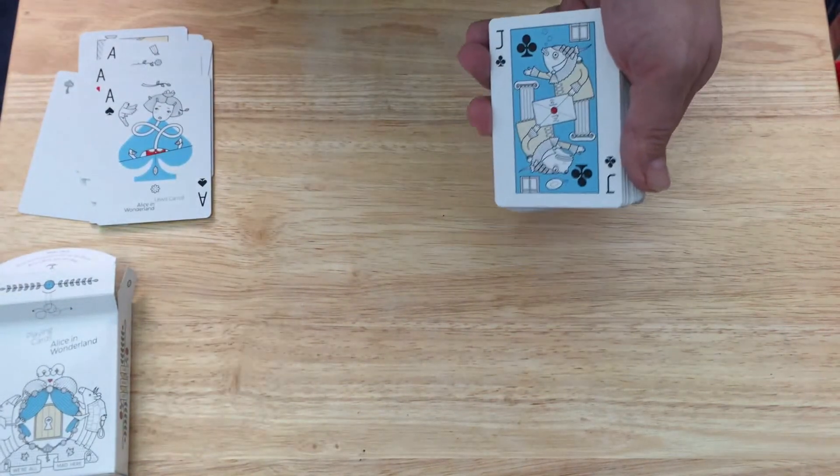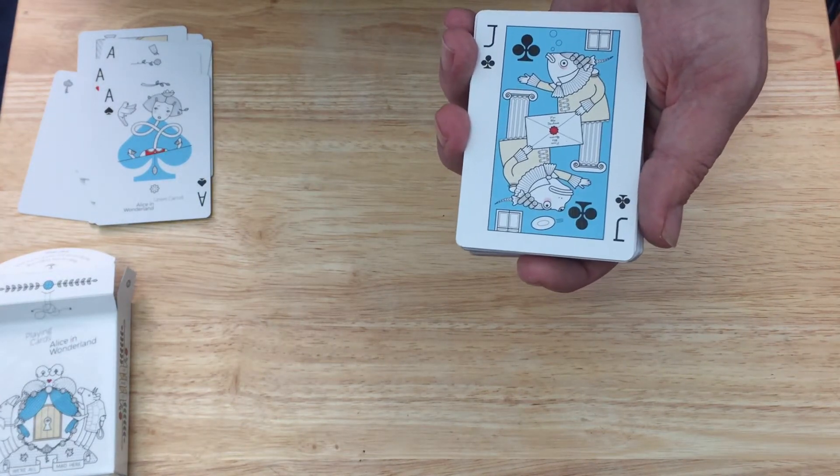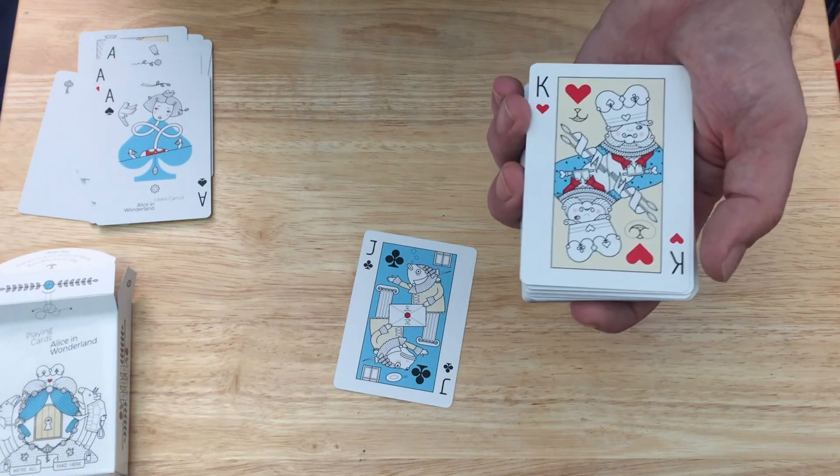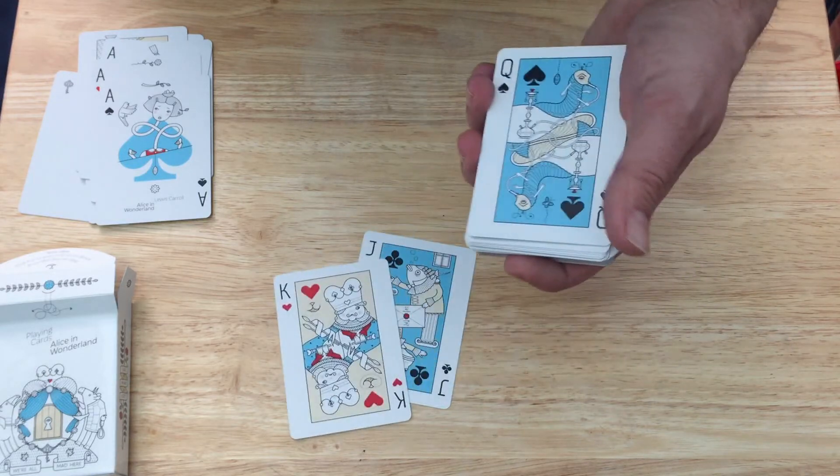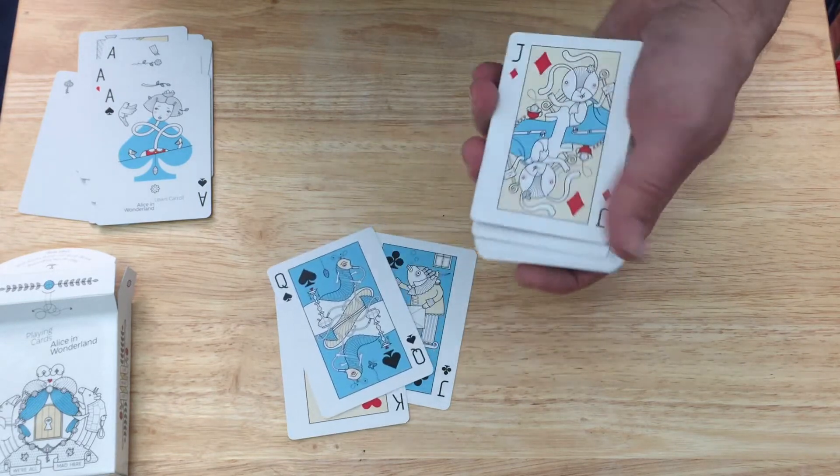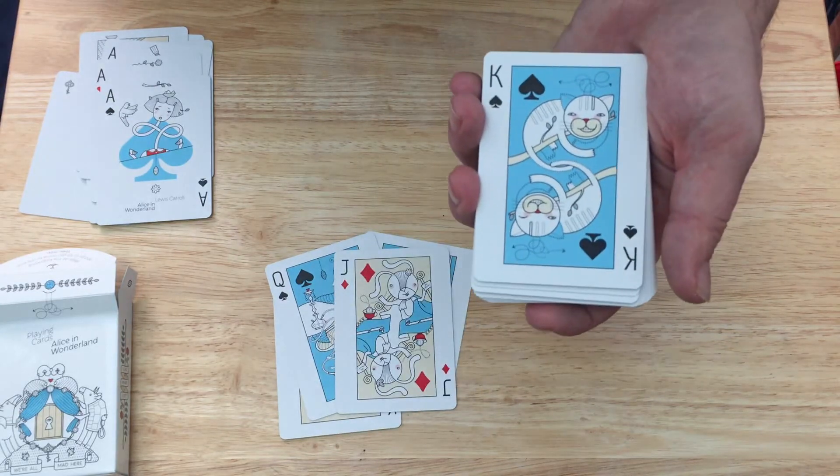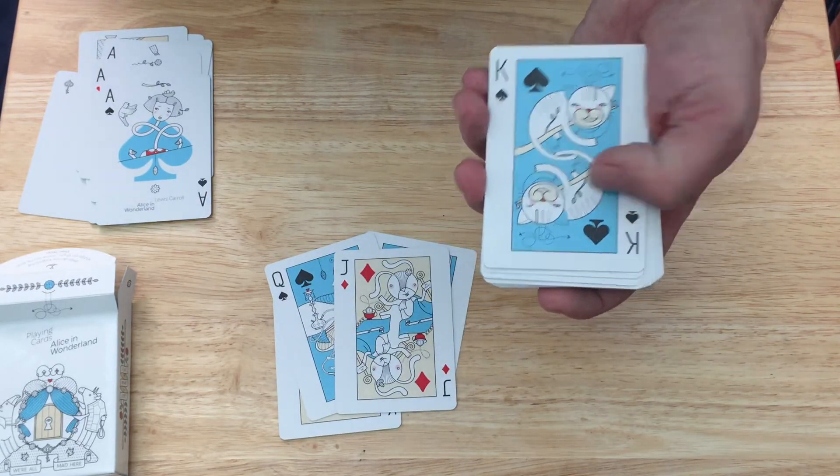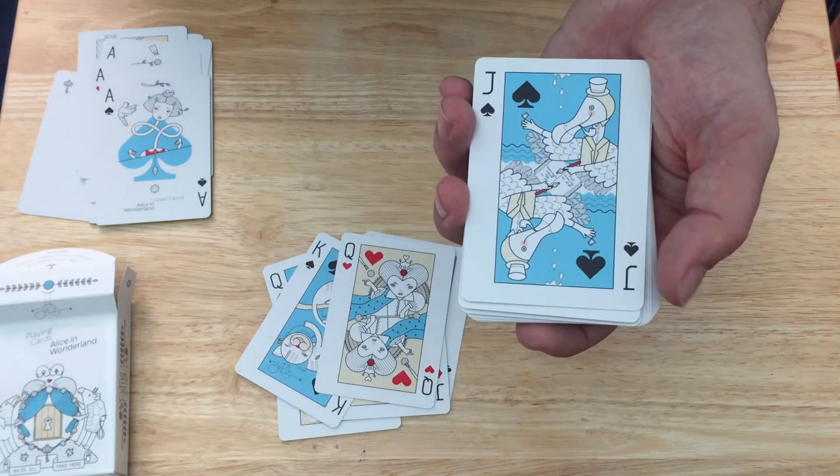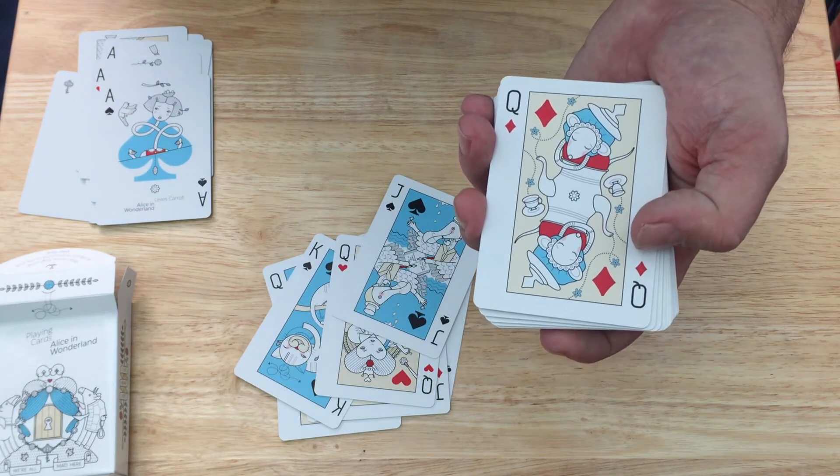And then we get to the court cards. The Jack of Clubs here is I said what is in order with this footman. This obviously is a King of Hearts. The Queen of Spades here is the caterpillar. The Jack of Diamonds is the mad hare. The King of Spades is the Cheshire cat. The Queen of Hearts is obviously the Queen of Hearts, simple enough. The Jack of Spades is the dodo. The Queen of Diamonds is the doormouse.